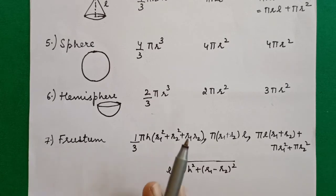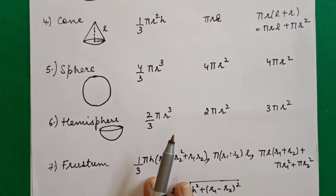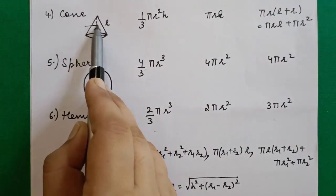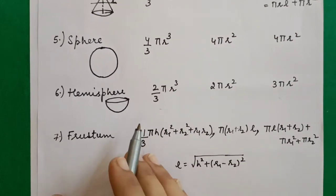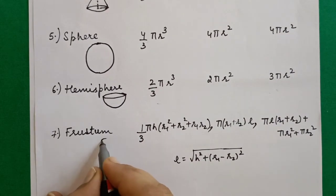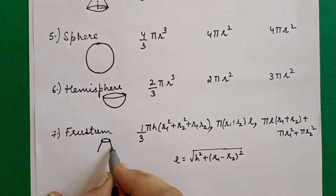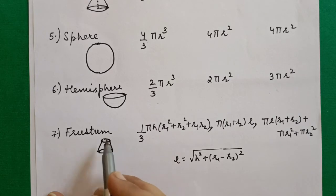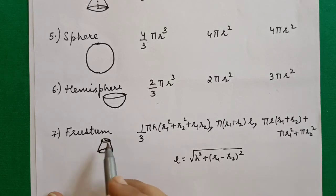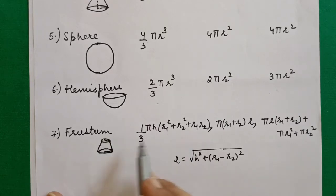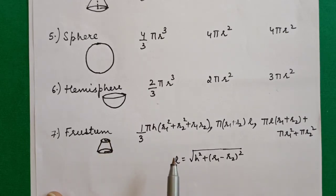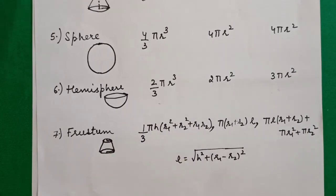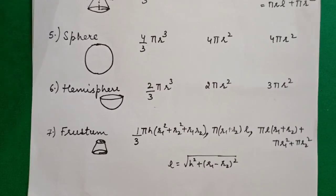The last formula is for a frustum. A frustum is formed when we cut a cone from the top — the pointed part is removed and the remaining figure is called a frustum. It has two radii, R1 and R2. Learn these formulas and then let's look at question number 1.